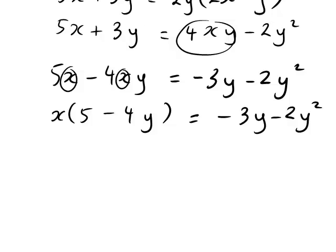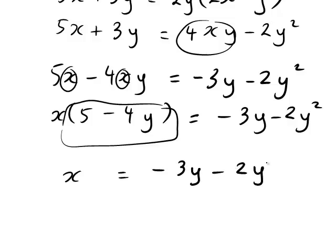Now our required unknown x is multiplied by the factor 5 minus 4y. So if we divide both sides of the equation by 5 minus 4y, that will cancel it from the left, and leave us with what we require, which is x as the subject of the formula. That is dividing both sides by 5 minus 4y, we get x equals minus 3y minus 2y squared divided by 5 minus 4y.